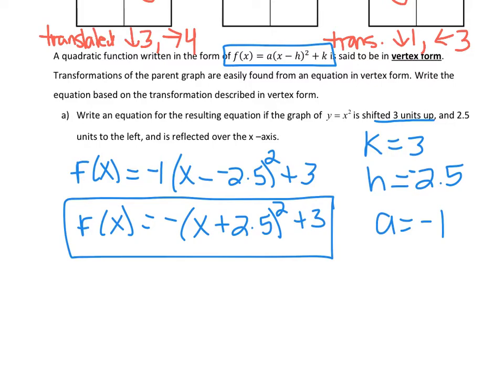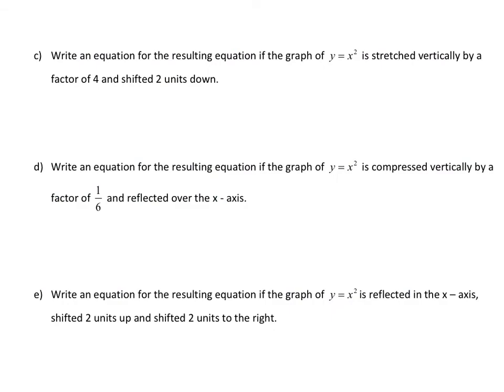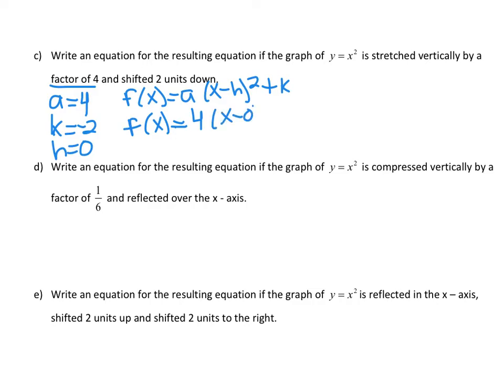Let's do another one. Letter C. Write an equation for the resulting equation if the graph of y equals x squared is stretched vertically by a factor of 4. That tells me dilation, so a equals 4. It shifted two units down, so k equals negative 2. And it doesn't tell me anything about left or right, so I know that h is 0. Plug it into our formula. f(x) equals a times (x minus h) squared plus k. f(x) equals 4(x minus 0) squared minus 2. Let's clean it up. 4x squared minus 2. So this is your function.